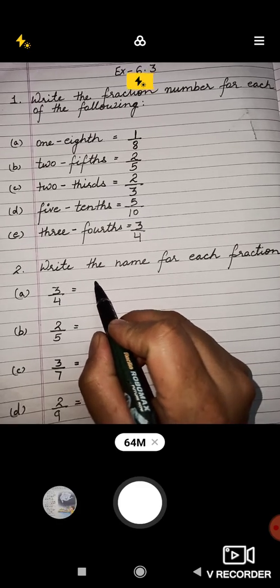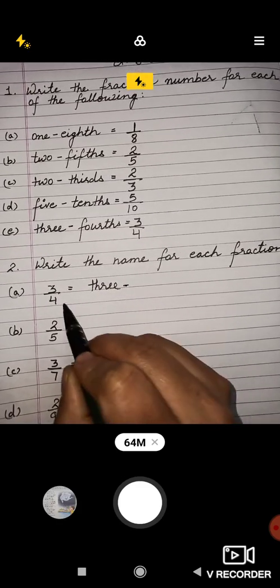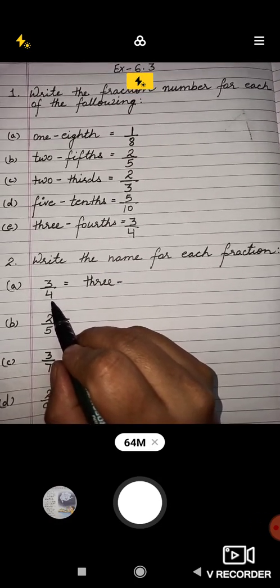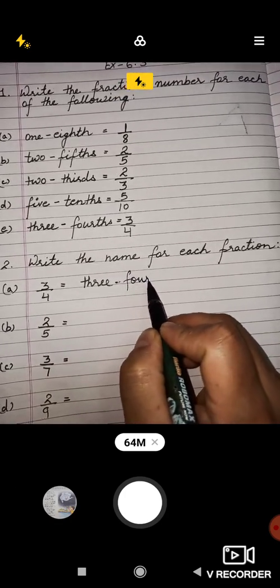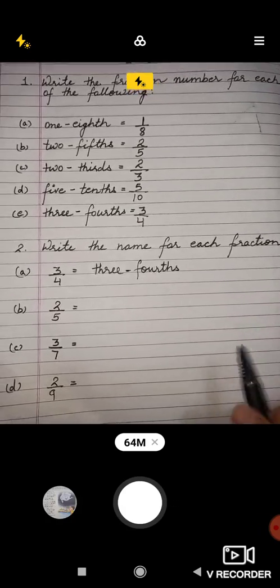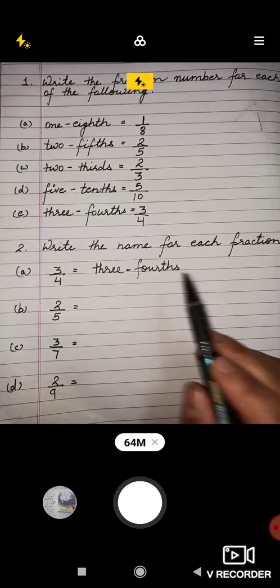Now we will write this in ordinal number - fourth, F-O-U-R-T-H-S, fourths. Numerator as a cardinal number and denominator as ordinal numbers. You all know ordinal number means first, second, third, fourth, fifth, sixth, seventh, eighth, ninth, tenth, like this.